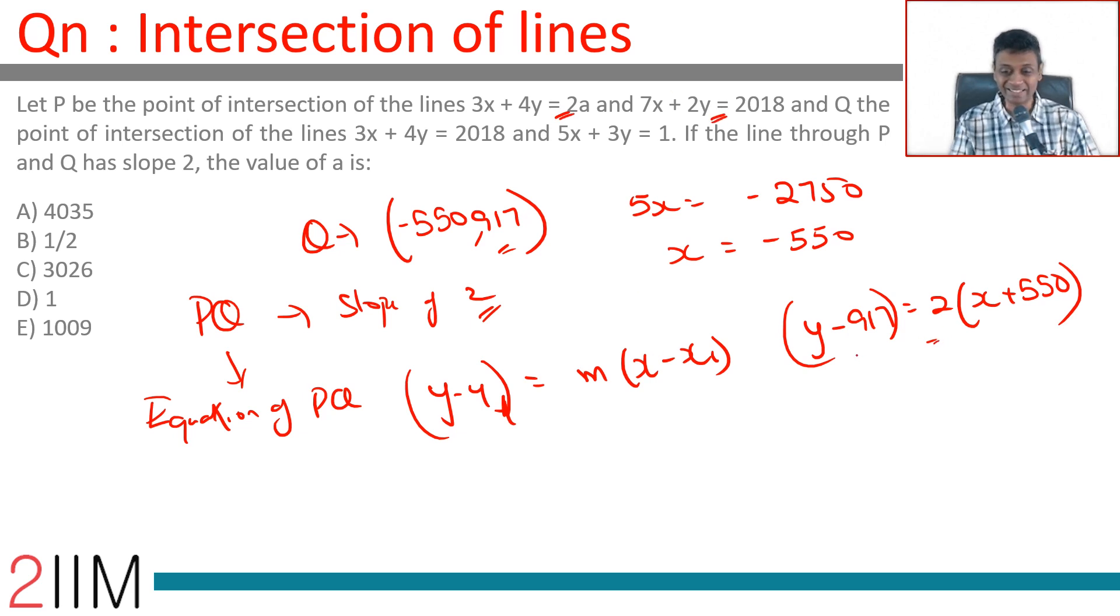P should lie on it. The point of intersection of these two lines should lie on this line, or the three lines are all concurrent. All three lines pass through P: these two lines meet at P, this line passes through P.